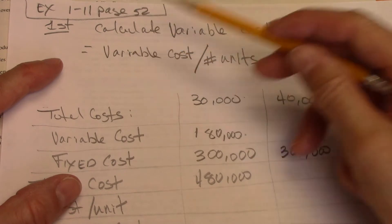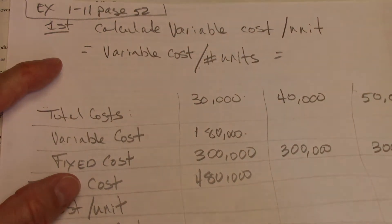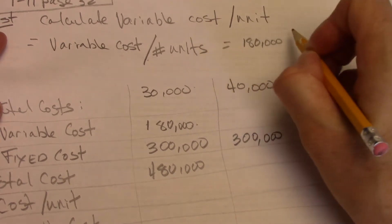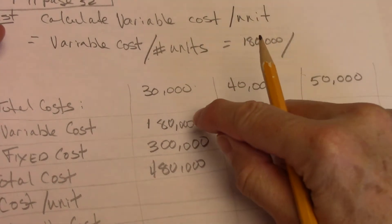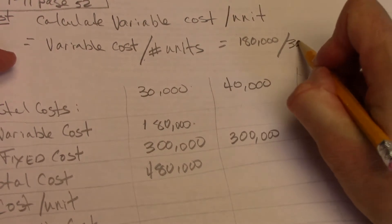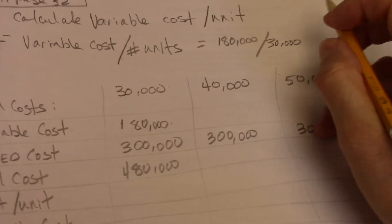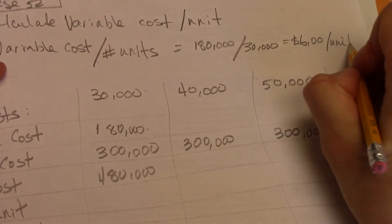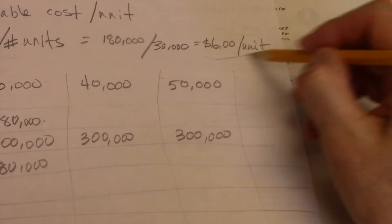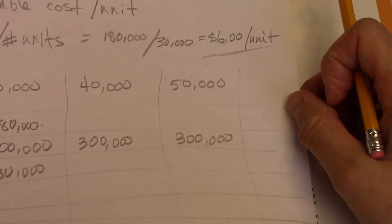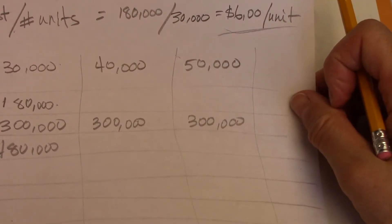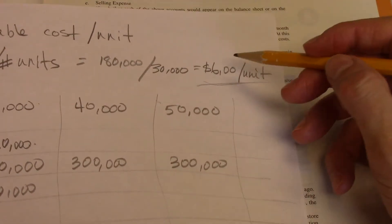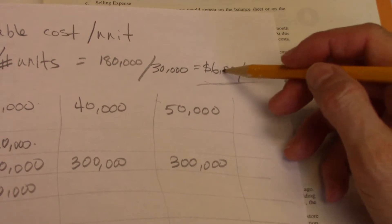So to calculate a variable cost per unit, I take my total variable cost and divide it by the number of units. So it's $180,000 divided by $30,000, and that's equal to $6 per unit. So as the number of units increase, my total variable cost is going to increase by $6 for every additional unit.